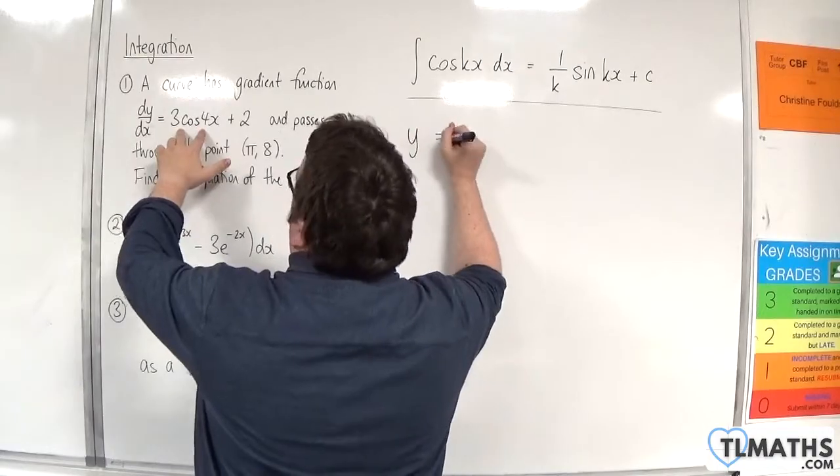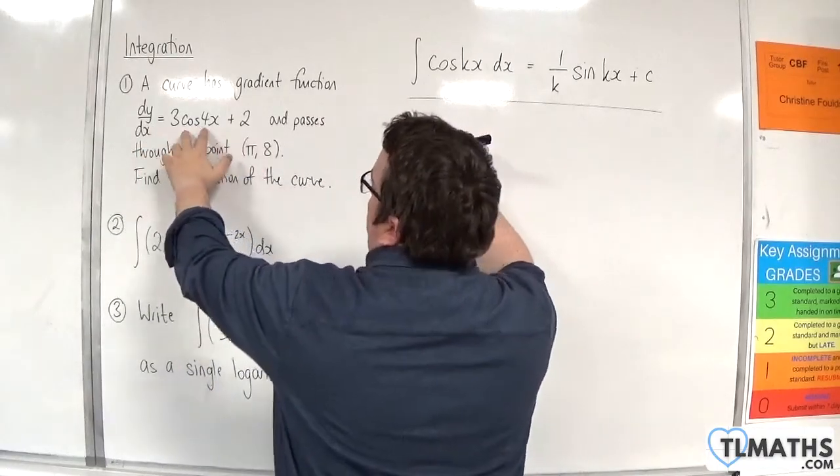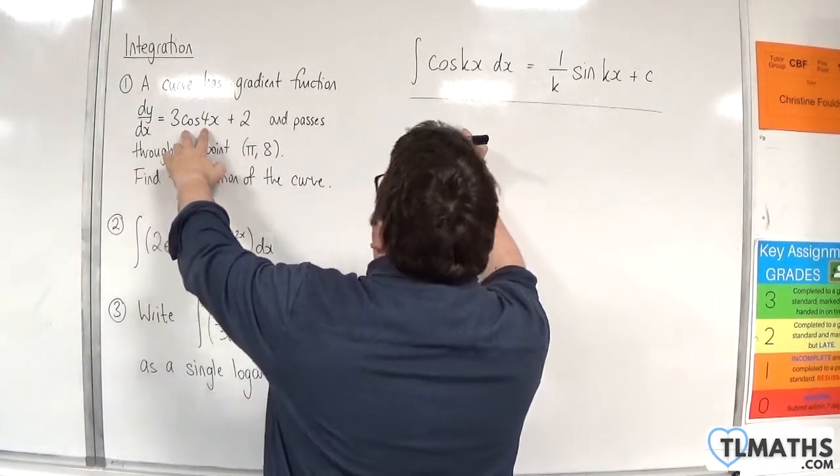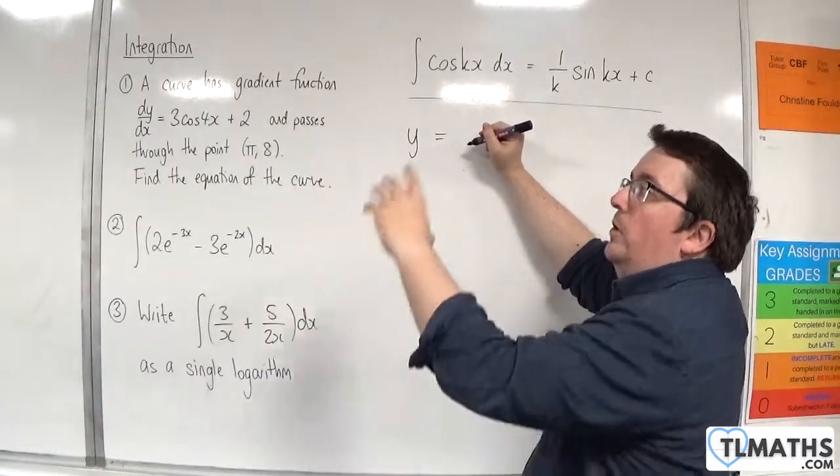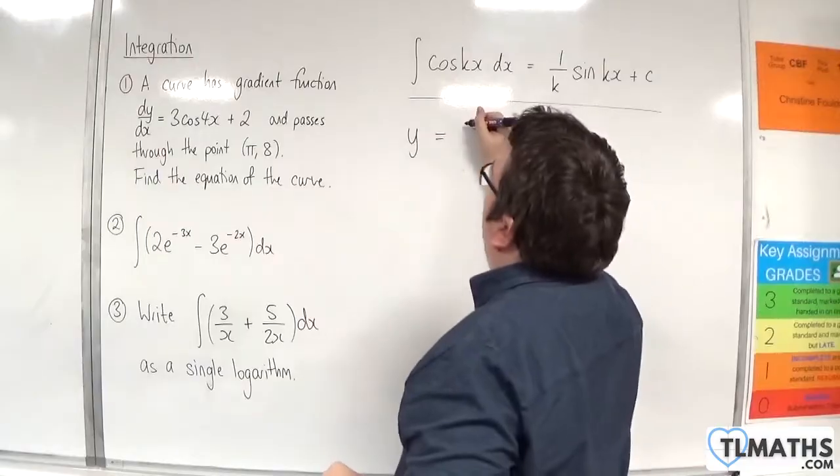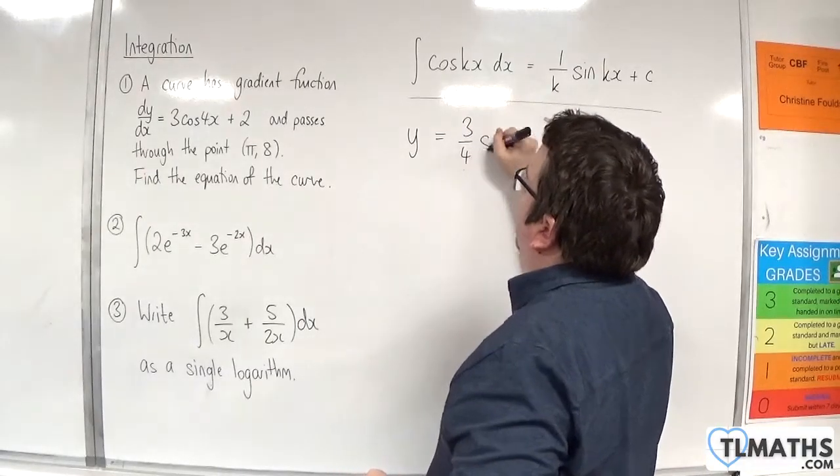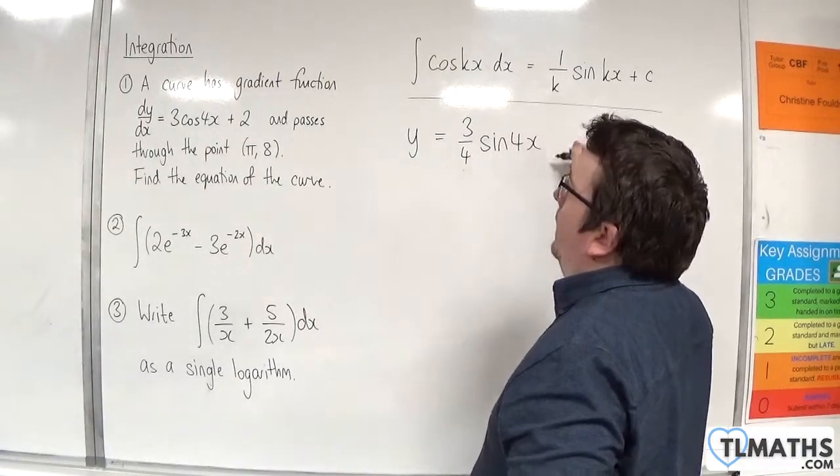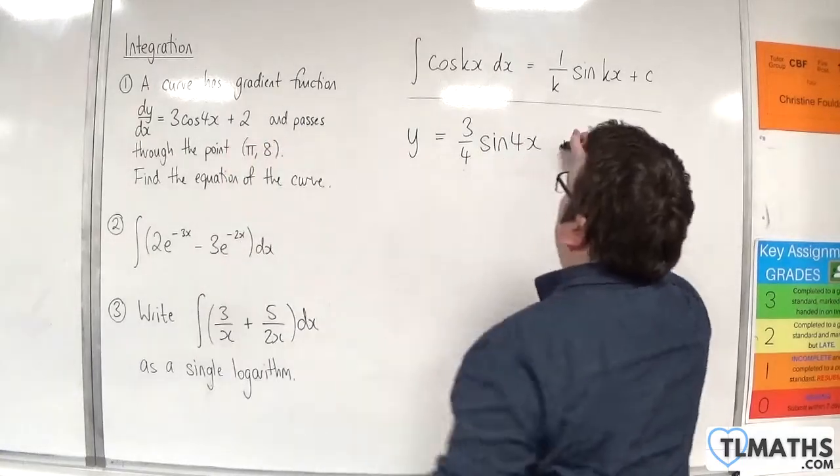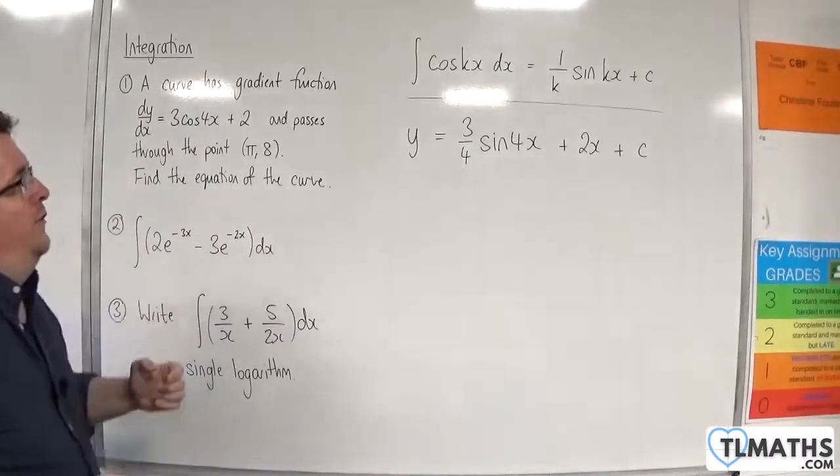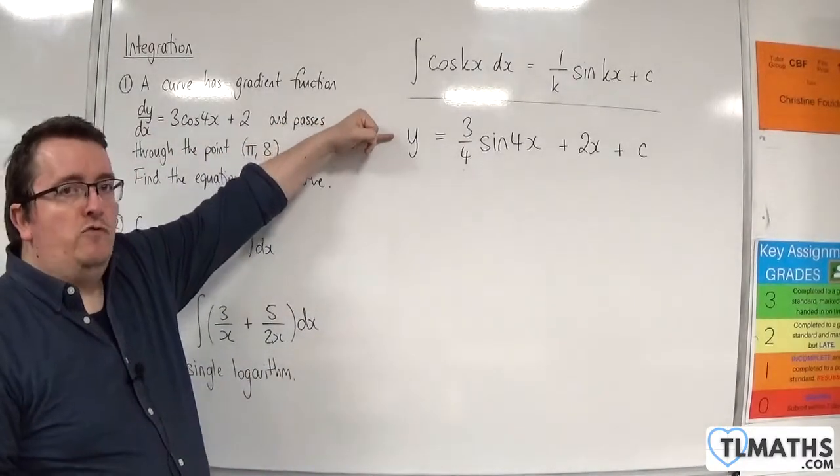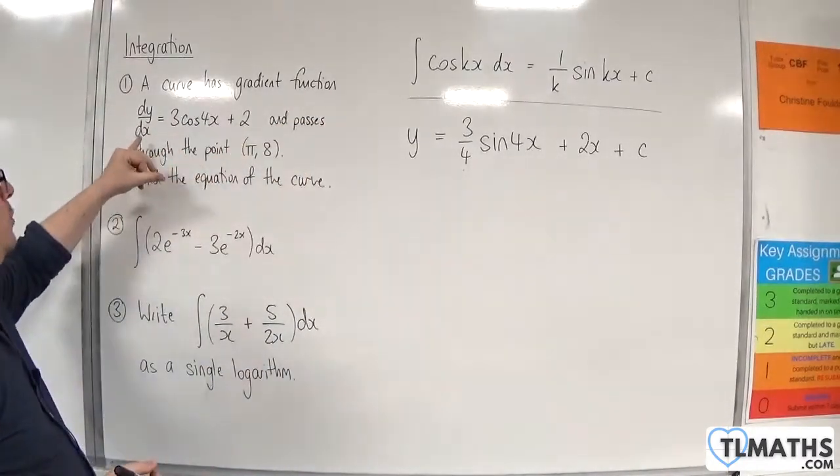When we integrate this, 3 cosine of 4x will integrate to 3 lots of 1 over 4 sine of 4x, so 3 quarters sine of 4x. The 2 will integrate to 2x, and we'll have a plus c constant of integration. That is the general solution to this differential equation.